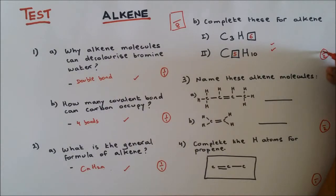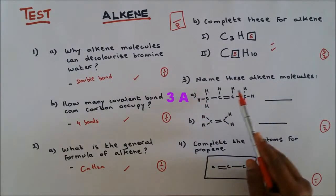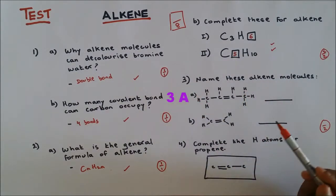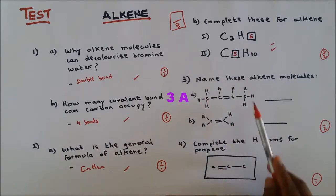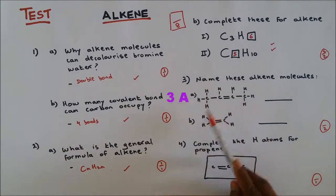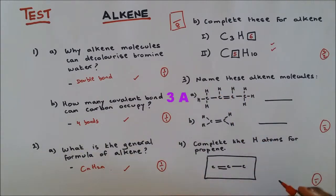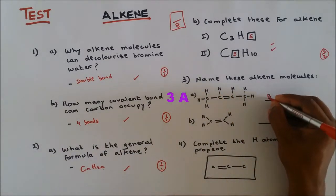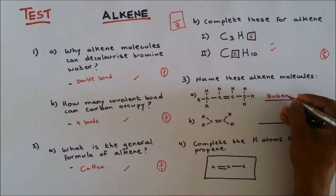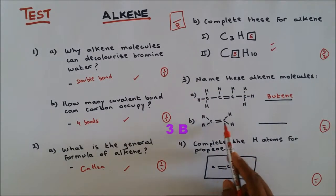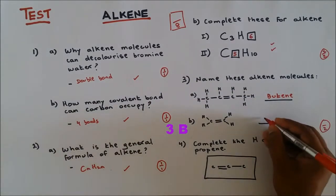Two marks, two out of two. Question number three: Name these alkene molecules. There is four carbon here - one, two, three, four - and it's an alkene, so it is butene. There's two carbon here, so this is ethene.